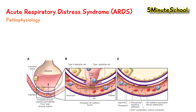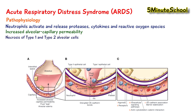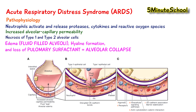Neutrophils are one of the inflammatory mediators that activate, releasing proteases, cytokines, and reactive oxygen species. This migration and mediator release causes an increase in capillary permeability, creating a knock-on effect where more inflammatory mediators cross the barrier between the blood supply and the lungs. The end result is that type 1 and type 2 alveolar cells start to die, causing swelling, formation of a hyaline membrane, and loss of pulmonary surfactant — which normally prevents the alveoli from collapsing. This leads to alveolar collapse and difficulty with gas exchange.